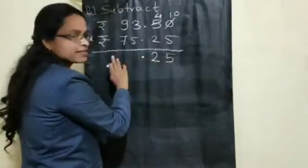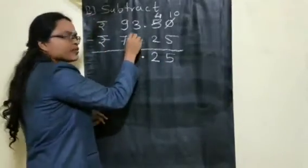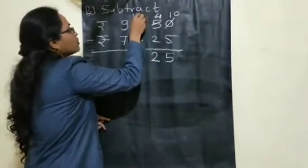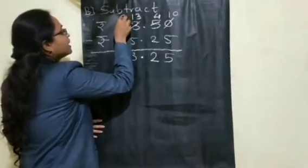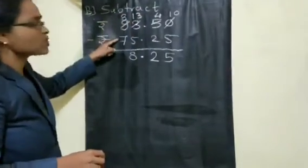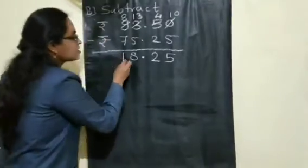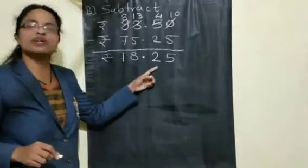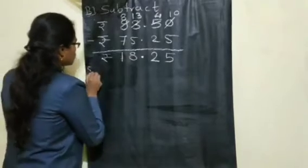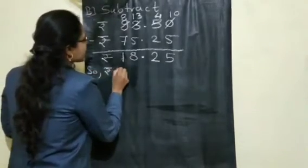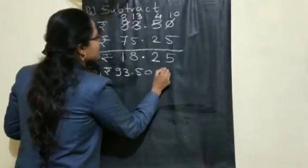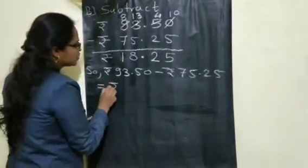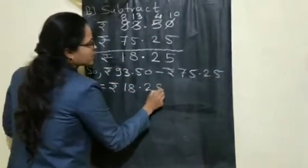Can you subtract 5 from 3? Again, it is not possible — you have to borrow. So this will become 30, and here 8. From 8 minus 7 is 1, so here you get 1. Write the rupees symbol — the answer is rupees 18.25. So: rupees 93.50 minus rupees 75.25 is equal to rupees 18.25.